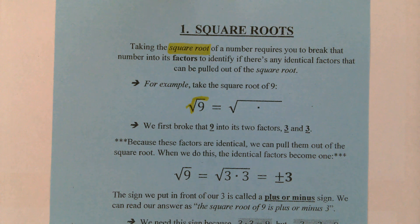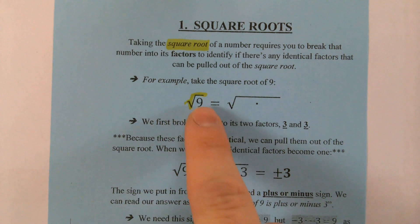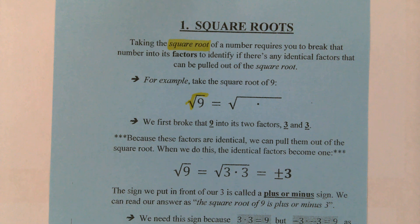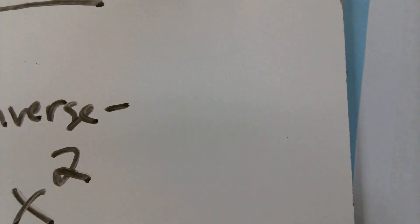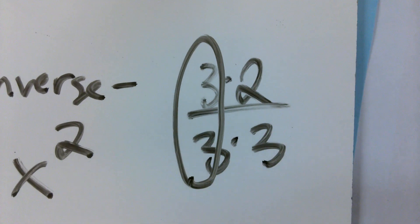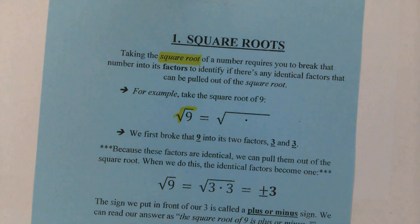Whatever number is inside that square root, we're going to have to break it up into its factors. Another way of thinking about breaking a number up into its factors is asking yourself a question. The reason why we break it up into factors is to see if there are any identical factors we can pull out — in the same way that when we have identical factors in a fraction, like 3 times 2 over 3 times 3, we can cancel them out.